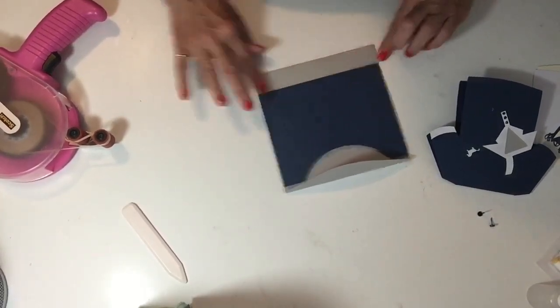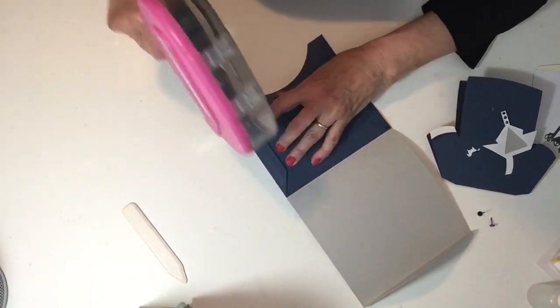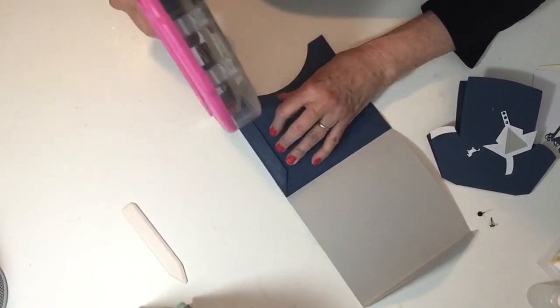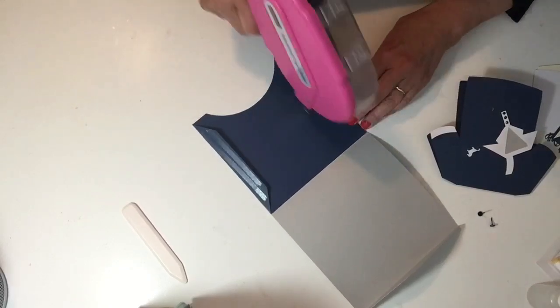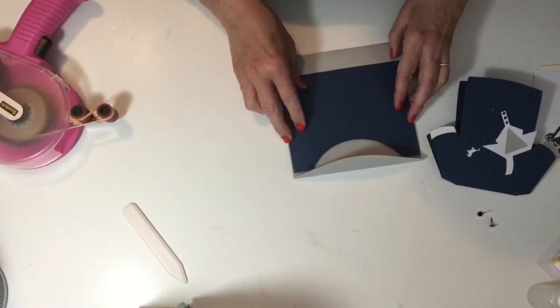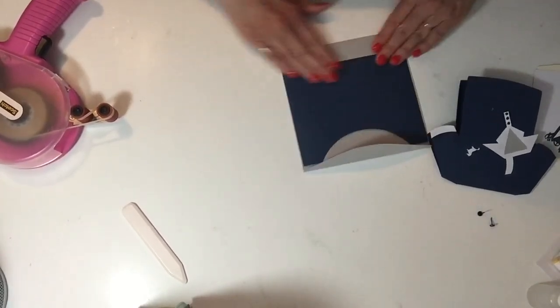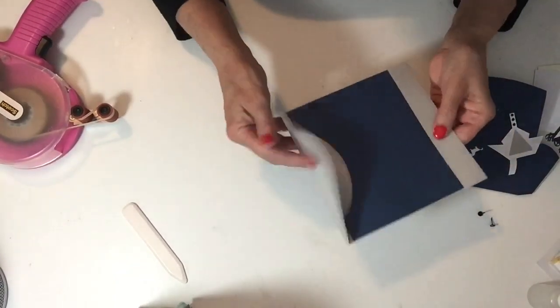We'll open it again and put some tape on these holes, on the wings that we have on the side. Just make sure it's nice and straight, and there we go, we have our envelope.